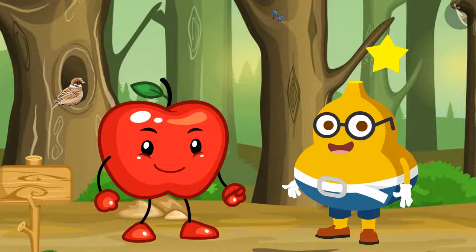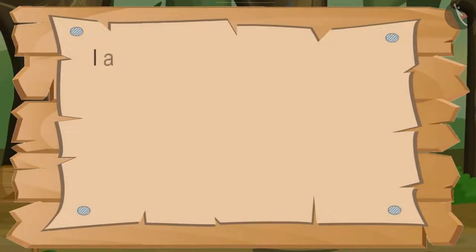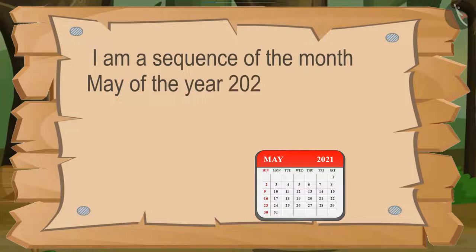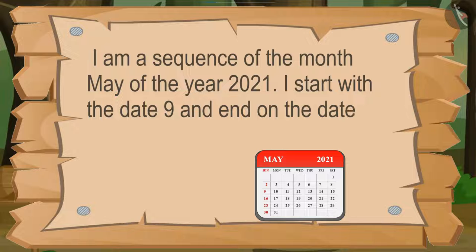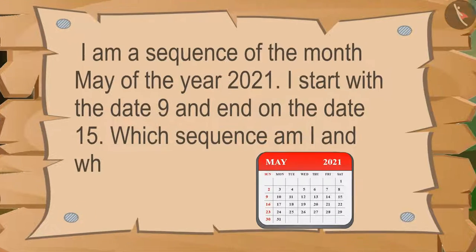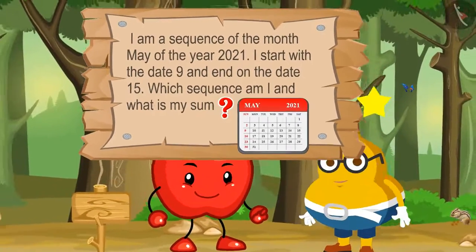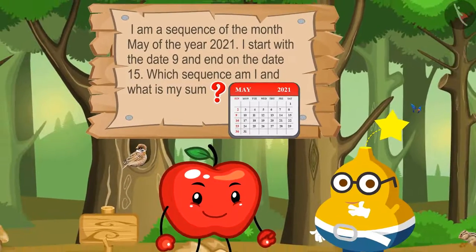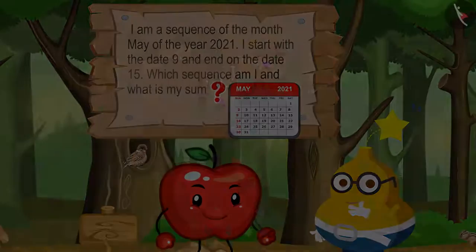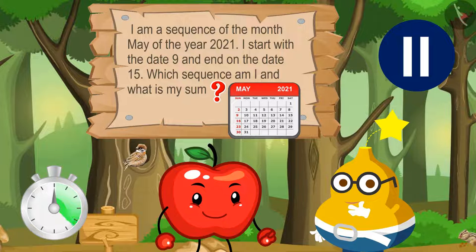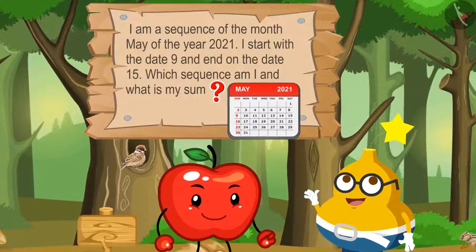So the puzzle is: I am a sequence of the month of May of the year 2021. I start with the date 9 and end on the date 15. Which sequence am I, and what is my sum? Students, do you want to help Fruity? Wonderful — you can pause the video and try to solve the puzzle. Like you, Fruity is also trying to solve the puzzle.